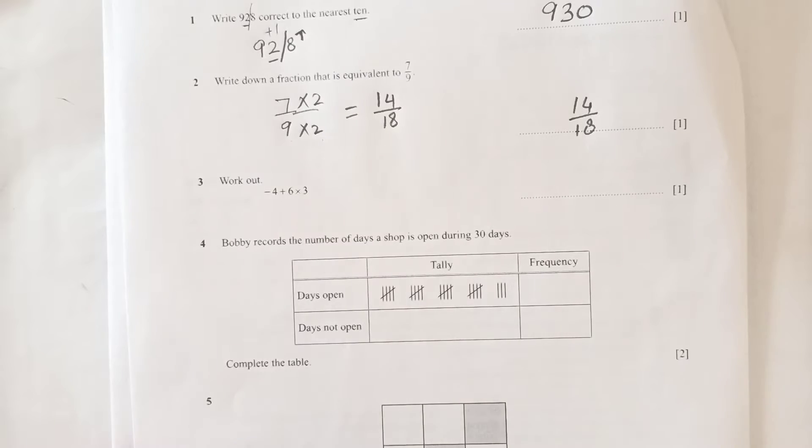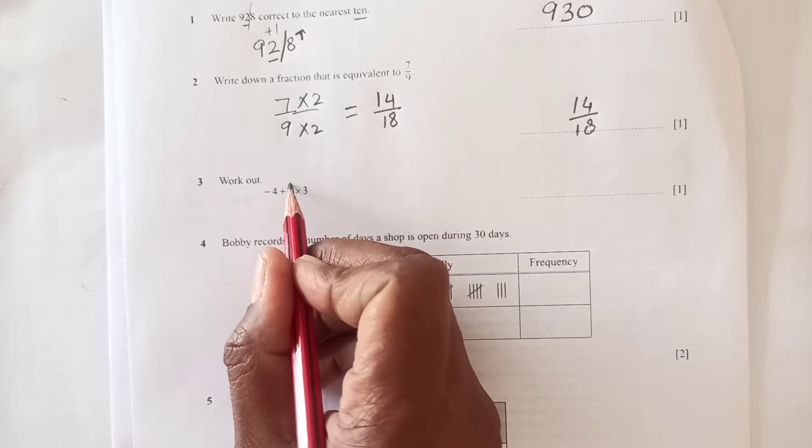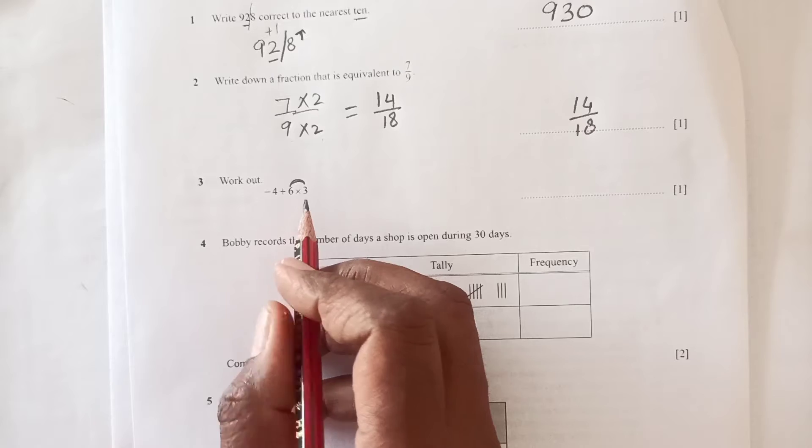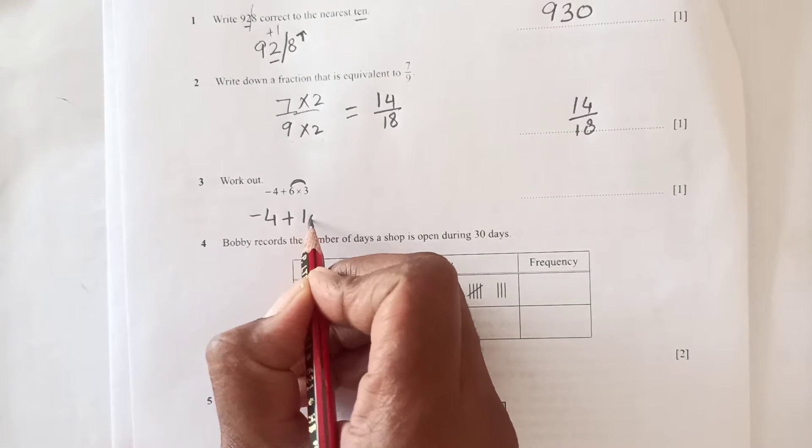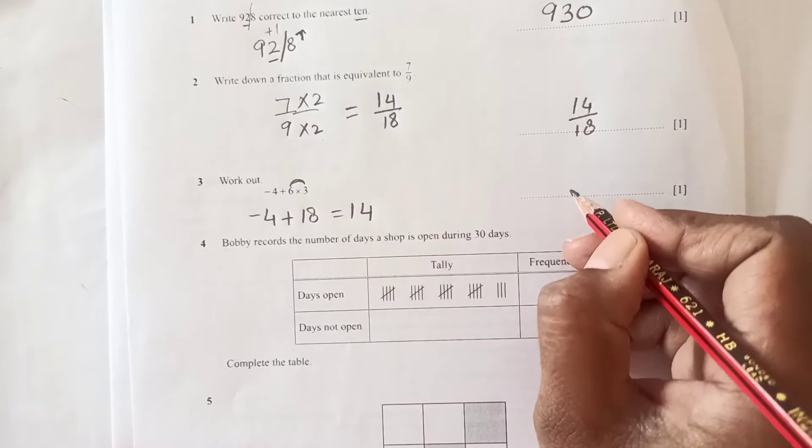Number 3: work out. We need to apply BODMAS, so we solve multiplication first. Negative 4 plus 6 times 3 is 18, 18 minus 4 is 14. Simple.